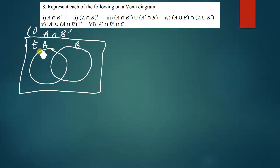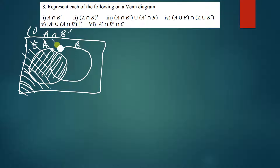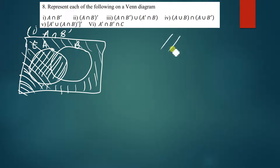First I'll shade what A is — A is simply just this part here. Now after shading A, let me also shade B complement. B complement is just anything that is outside B, so I'm going to shade using lines crossing like this. The part where these crossing lines meet — that's where my solution lies. This is where my solution is.